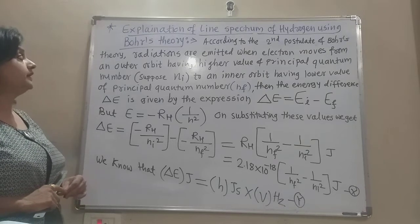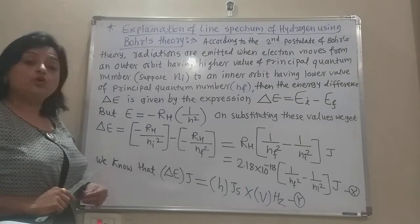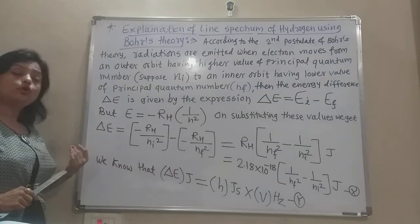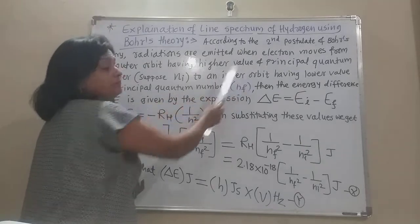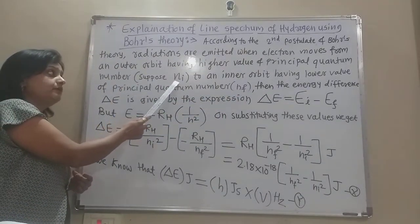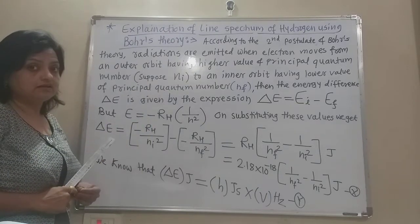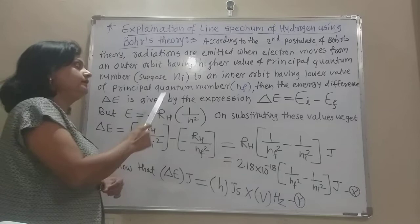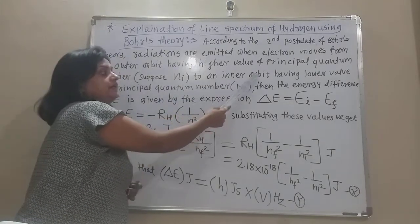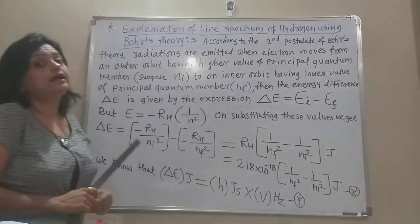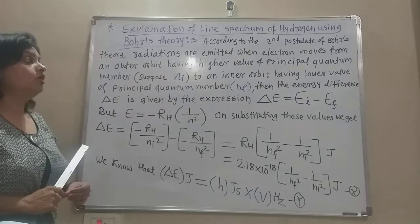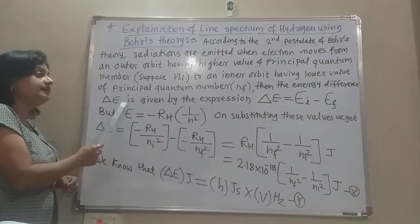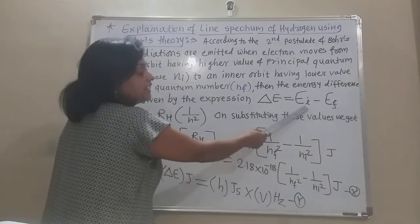The second postulate states that radiations are emitted when electrons move from an outer energy level to an inner energy level. That means when an electron moves from an outer orbit having a higher value of principal quantum number Ni to an inner orbit having a lower value of principal quantum number Nf, the energy difference delta E is given by delta E equals Ei minus Ef.